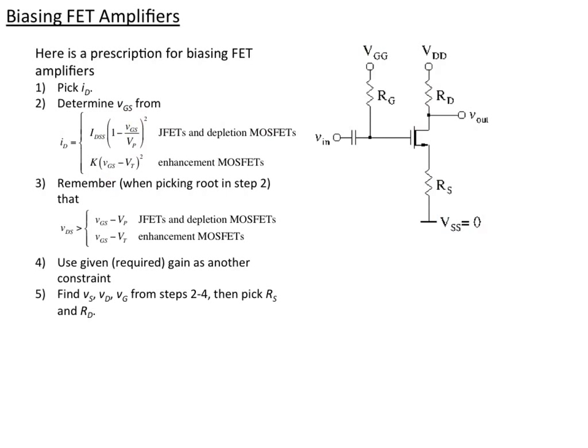And we'll want to make sure when we do that, there are two roots to this when we're finding VGS. And we want to pick the root that will make sure that we're in the active region using the formula for the active region. And then we also want there to be the given gain, which is the final constraint. So that will allow us to determine the resistors we need, RD and RS. And then we can just determine what the voltages should be at the three parts of the circuit. And we pick the source resistor and drain resistor as required.